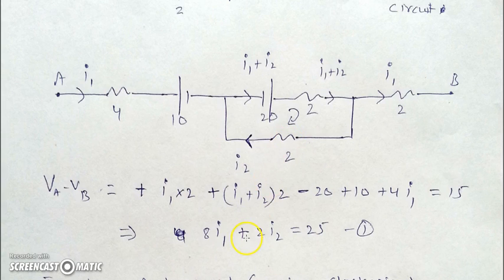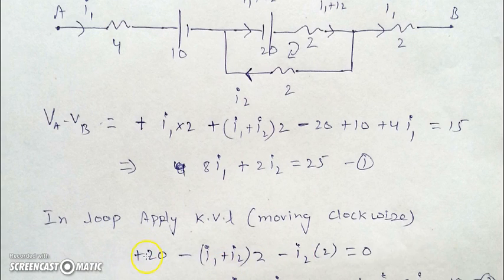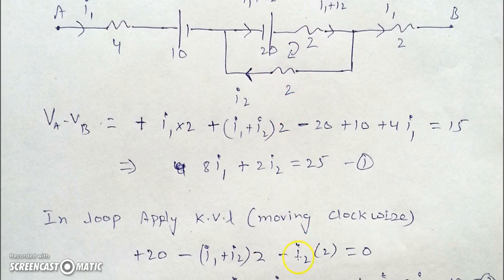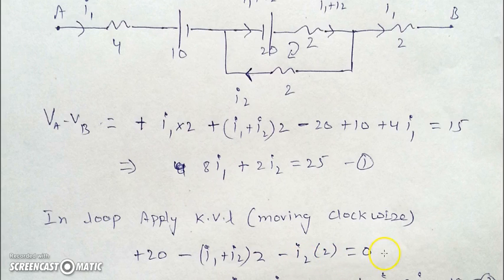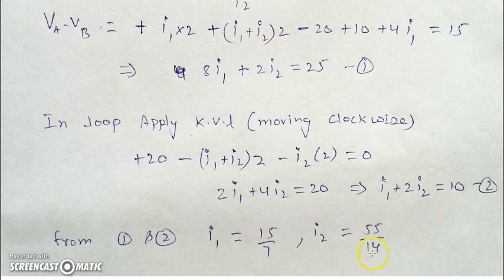The simplified first equation involves 8I1. For the second loop equation: jumping the battery from negative to positive gives +20, then moving in the direction of current I1 + I2 through the 2-ohm gives −(I1 + I2) × 2, and crossing the lower 2-ohm in the direction of I2 gives −I2 × 2, equalling zero. Note that through the lower 2-ohm only I2 flows, while through the upper 2-ohm the current is I1 + I2. Solving equations 1 and 2 gives us the values of I1 and I2.